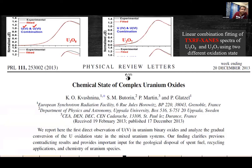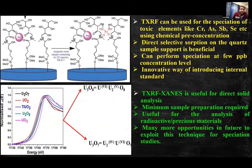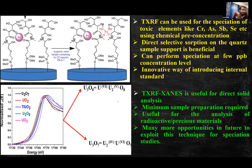This proves that U₃O₈ is composed of uranium +5 and +6, contrary to many reports claiming +4/+6. This finding agrees with a study published in Physical Review Letters. The same methodology was applied to another mixed valent uranium oxide, U₃O₇, where uranium was found to be present as +4 and +6. In summary, TXRF-XANES can be used for speciation of toxic elements like chromium, arsenic, antimony, and selenium in environmental samples at ultratrace levels, and for precious or highly radioactive materials requiring minimum sample preparation.